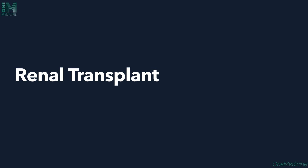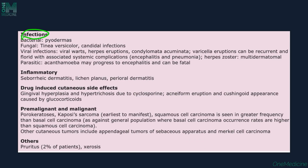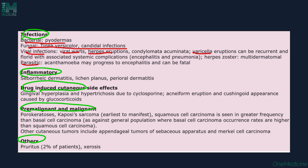The manifestations of renal transplantation include infections, inflammatory lesions, drug-induced lesions, premalignant and malignant lesions, and others. Infections include bacterial infections like pyodermas, fungal infections like tinea versicolor and candidal infections, viral infections like viral warts, herpes, and herpes zoster or varicella, and parasitic infections like acanthamoeba. Inflammatory conditions include seborrheic dermatitis, lichen planus, and perioral dermatitis. Drug-induced lesions occur because of immunosuppressants: cyclosporine can cause gingival hyperplasia and hypertrichosis, whereas glucocorticoids can cause acneiform eruptions and cushingoid appearance.